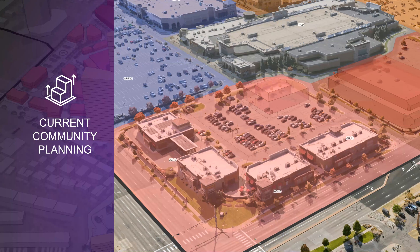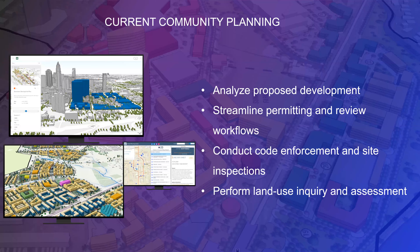Being able to analyze proposed development means looking at a plan in 2D and 3D in a secure environment that empowers you to do urban and regional planning better. You can review tools like lines of sight, look at shadow impact if you're building a 40-story building, analyze the effect of proposed zoning plans, and analyze proposed land exchanges — ensuring that every decision we make as planners is driven by data at hand, not by guesswork.